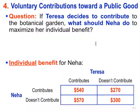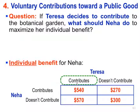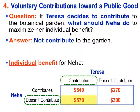Then the question asks: let's think about what's best for Neha depending on what Teresa does. If Teresa decides to contribute to the botanical garden, what should Neha do to maximize her individual benefit? We focus only on the left side of the matrix. If Teresa contributes, Neha can contribute and get $540, or not contribute and get $570. Since $570 is bigger, Neha's best option is to not contribute to the garden if Teresa contributes.